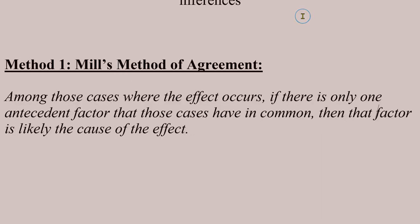The first method we'll talk about is Mill's Method of Agreement. The Method of Agreement can be explained this way: among those cases where the effect occurs, if there is only one antecedent factor that those cases have in common, then that factor is likely to be the cause of the effect.